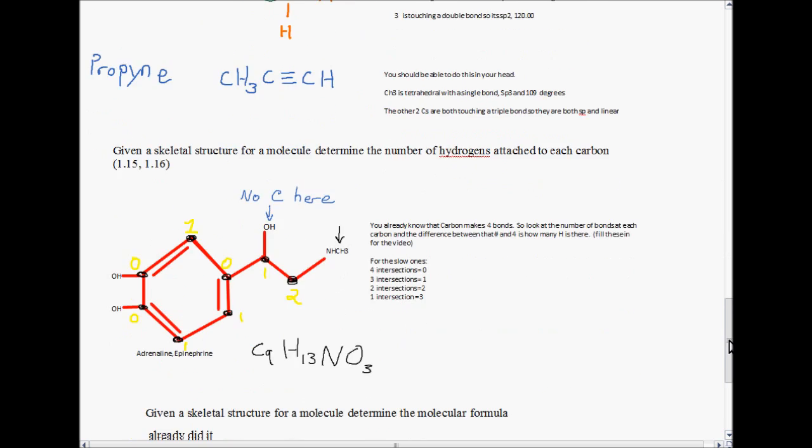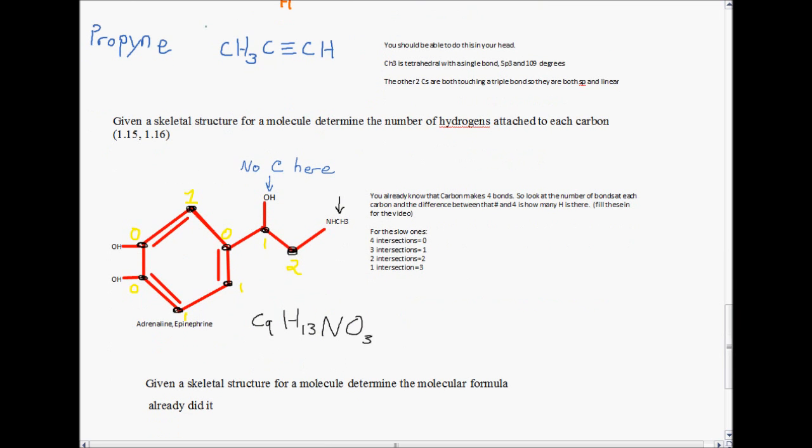Propyne, carbon 1, CH3, that's going to be an SP3. Carbon 2 is touching a triple bond. So, that's going to be linear, SP. Carbon 3 is also touching a triple bond. So, that's also linear. The other two carbons are touching triple bonds. They're both SP and linear.